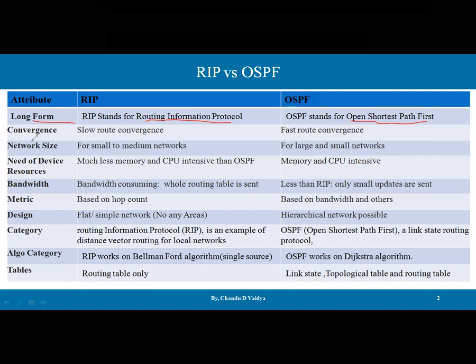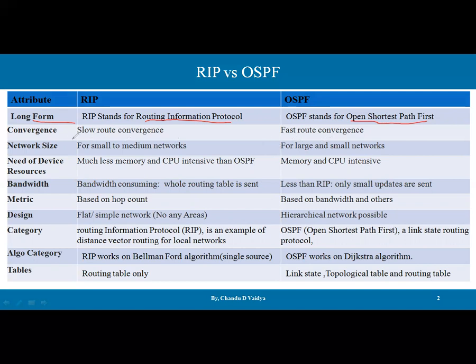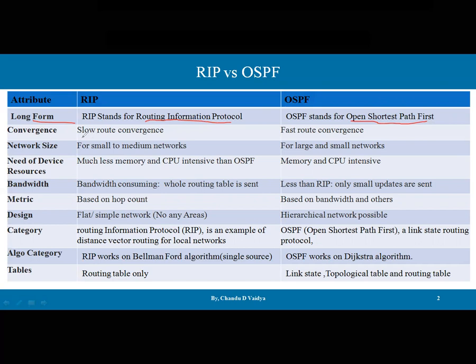The second parameter is convergence. In the RIP protocol there is slow route convergence, and in OSPF it is fast route convergence. This is because in RIP we are sending the routing tables to neighbors — if we have 10 routers, convergence is going to be very slow. OSPF convergence is much faster than RIP.